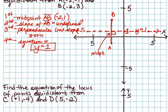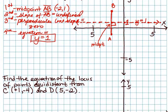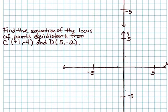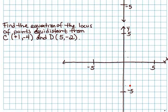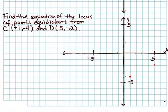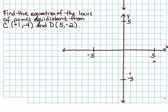Find the equation of the locus of points equidistant from (1, -4) and (5, -2). Now, this is getting a little tricky. It's sideways.